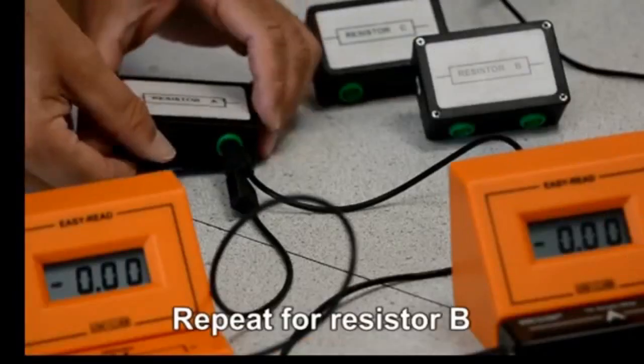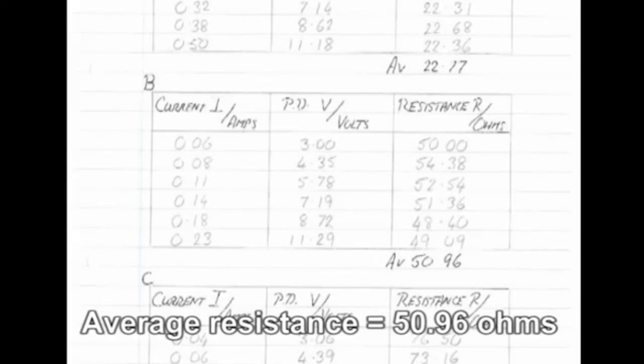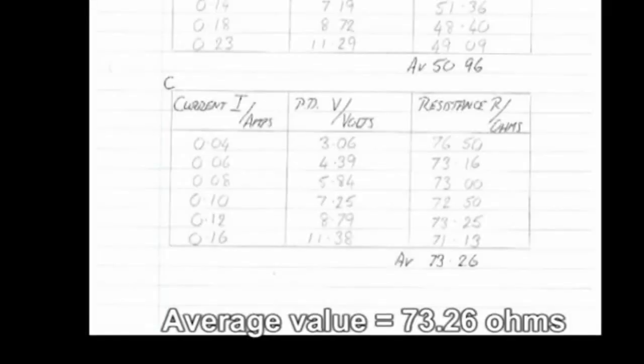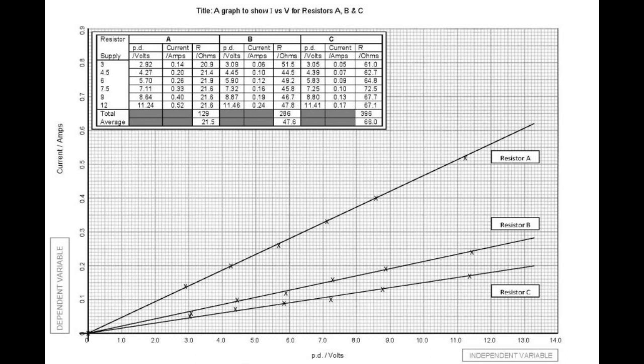Here are the results obtained in a table. Repeat for resistor B, and again for resistor C. These results can then be plotted. Here are the results obtained by a student for resistor A, B, and C, and plotted on the same graph. The gradient of each line can be related to the value of the resistor.